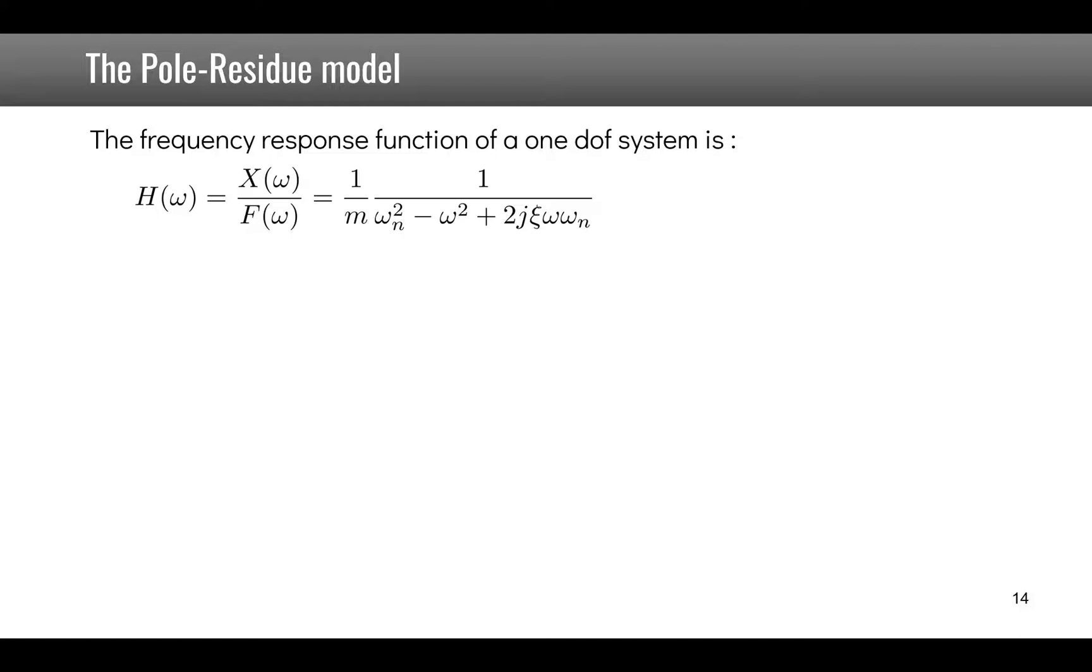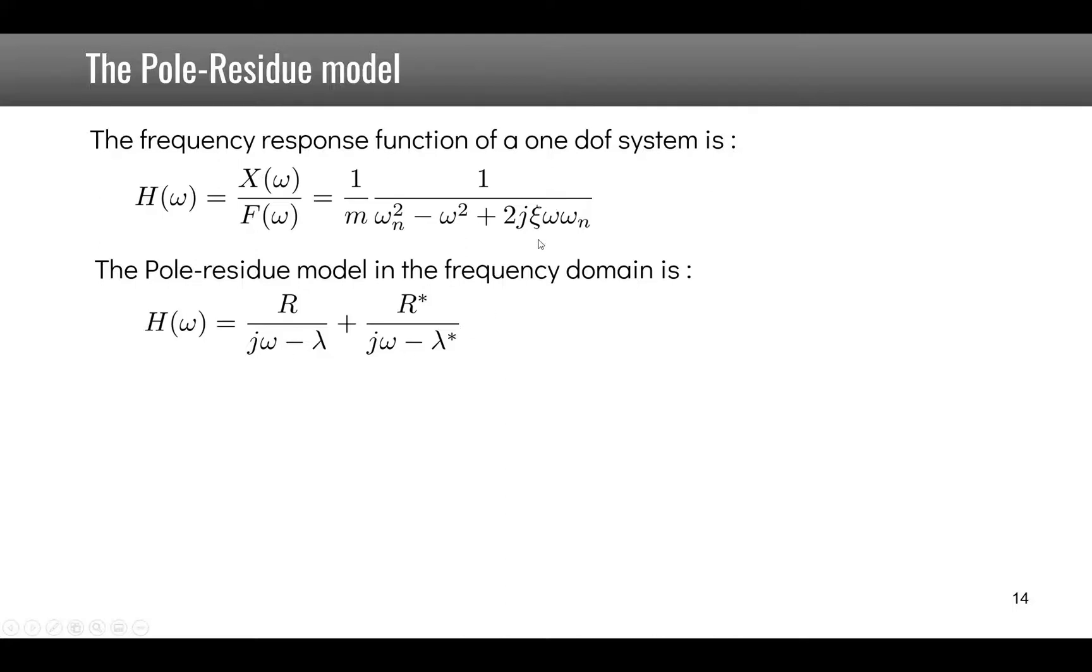Now the frequency response function of a 1 degree of freedom system is given by this expression that you all know by now. It can also be written in the pole residue form where we have here R which is the residue and lambda which is the pole. So if we equate these two equations we can see that lambda is minus psi omega n plus j omega d and R is minus j over 2m omega d.